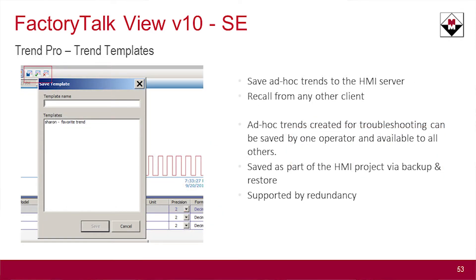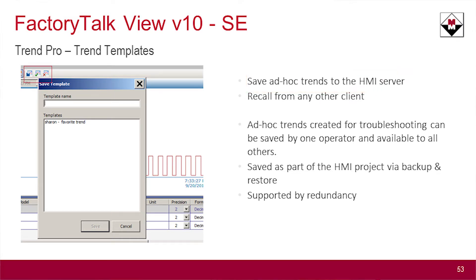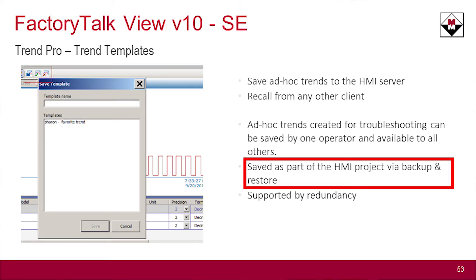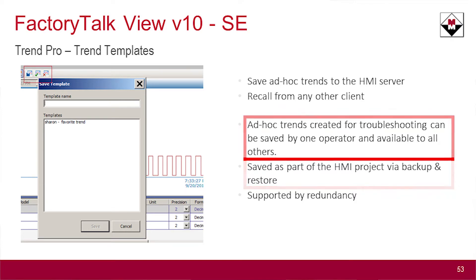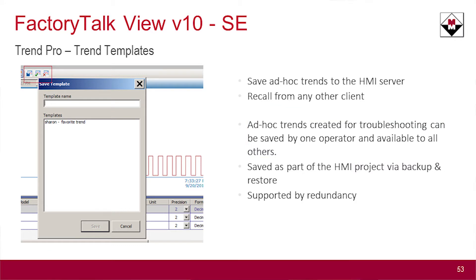In the trending chart, they've added the ability to create and save ad hoc trending reports. If you've ever used the Factory Talk Vantage Point product, one of its features is this ad hoc trending tool that lets you grab anything, create it, save it, and access it at another time or let anyone else access it. That's now built into version 10 of the View SE product — you can create custom trends, save them, and access them from another client.